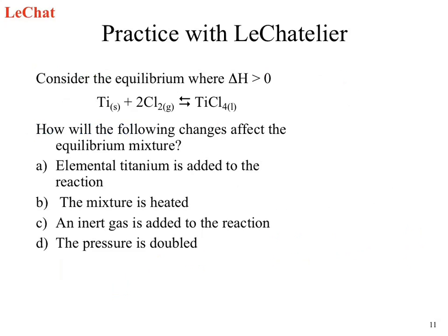Delta H greater than zero means delta H is positive. It's really simple — everybody goes 'oh, I would never forget that.' Take an exam and tell me you'll never forget that after you take the exam. So write that information down. Delta H greater than zero, it's positive, which means we can add in the endothermic. The next conclusion from that — I would then go back to my reaction and say heat is on the left-hand side of that reaction.